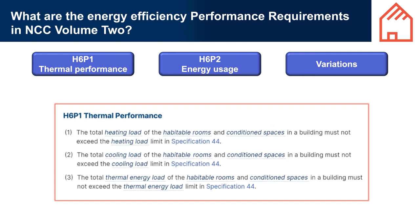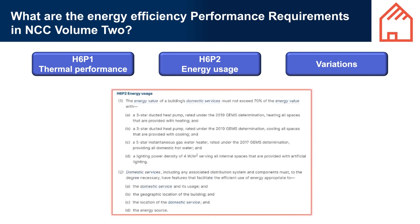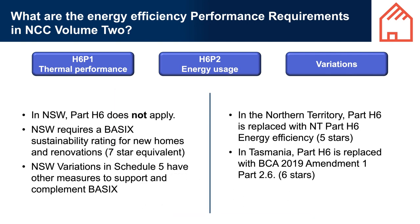Improving the building's thermal performance addresses how much energy is used to run things like air conditioning, heating, and lighting, and to heat water. It also considers the source of energy used, particularly the use of renewable energy, reclaimed energy, or low greenhouse gas intensity fuels. Variations exist for New South Wales, Tasmania, and the Northern Territory, and those working in these jurisdictions need to be aware of them. However, the aim of the provisions is the same across all states and territories: to reduce greenhouse gas emissions from housing in Australia.